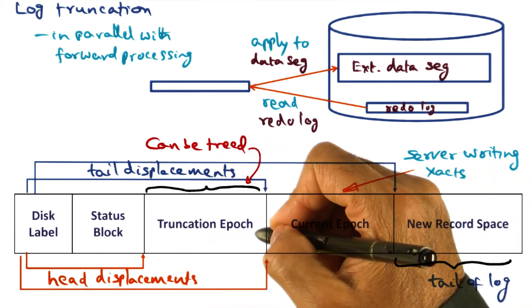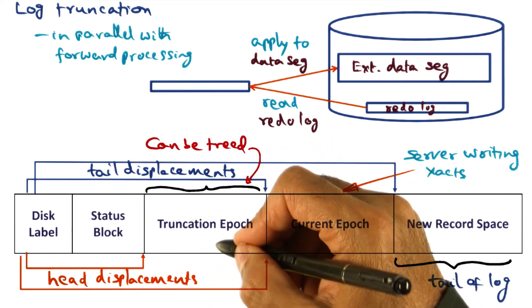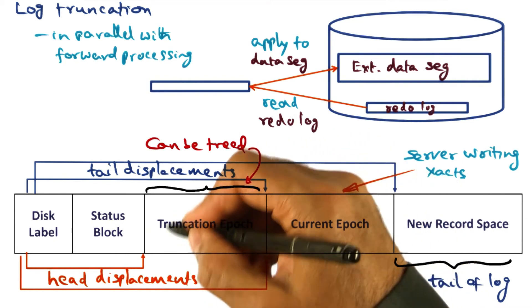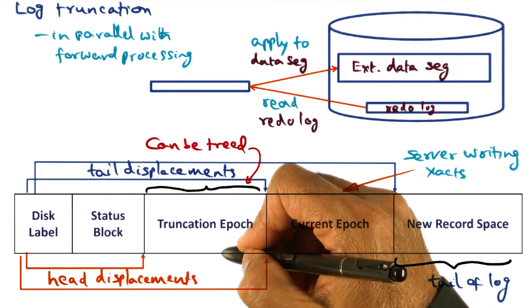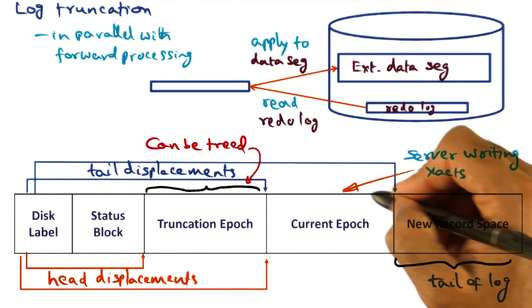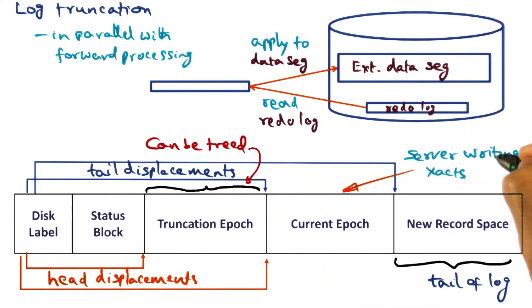So the crash recovery algorithm is being applied to the part of the log that is in this truncation epoch while allowing forward processing to the part of the log which is the current epoch that the server is working on.